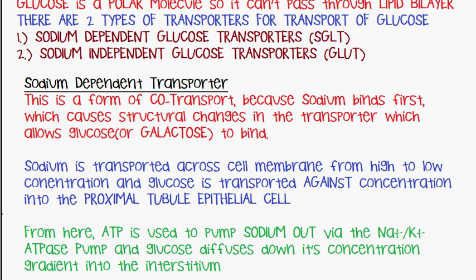Sodium is then transported across the cell membrane from high to low concentration. At the same time, glucose is transported against the concentration gradient into the proximal tubule epithelial cell. Both sodium and glucose are transported into the cell, but sodium goes from high to low concentration, and glucose goes against the gradient, from low to high.